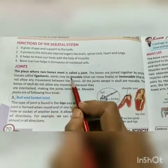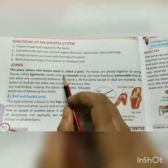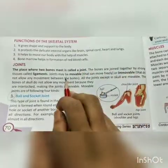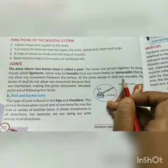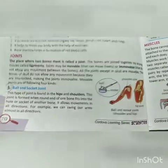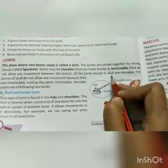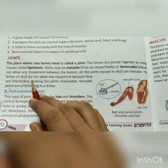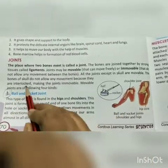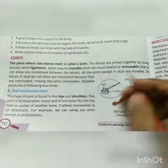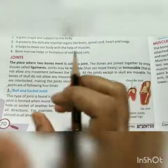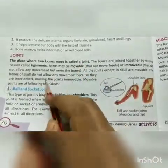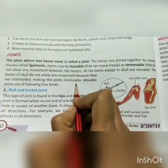Joints may be movable or immovable. Movable joints can be moved, while immovable joints cannot be moved. All joints except those in the skull are movable. The bones of the skull do not allow any movement because they are interlocked, making those joints immovable.